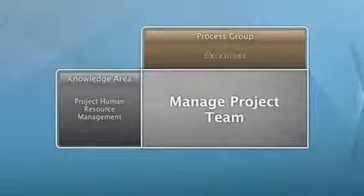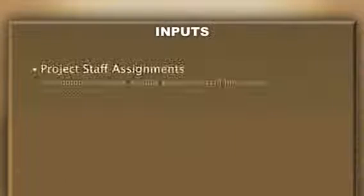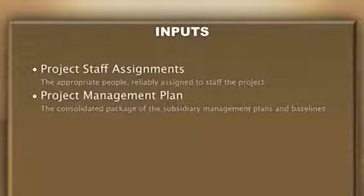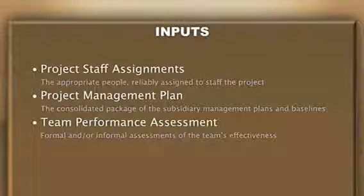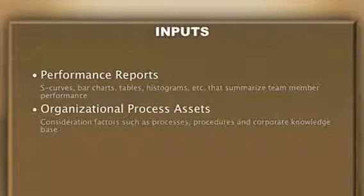Manage Project Team is an executing process. This process tracks team member performance to enhance overall project performance. There are five defined inputs: Project Staff Assignments, Project Management Plan, Team Performance Assessment, Performance Reports, and Organizational Process Assets.